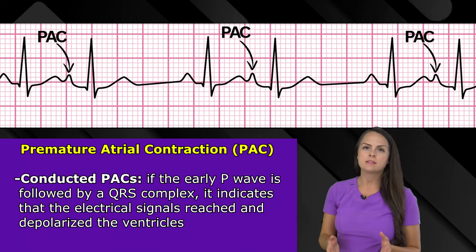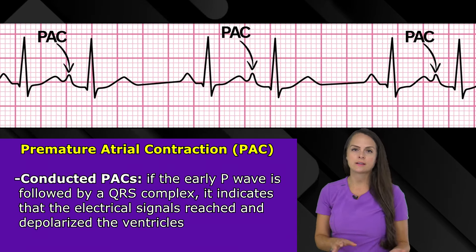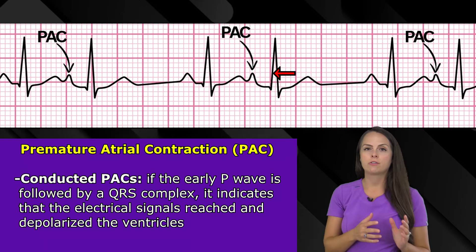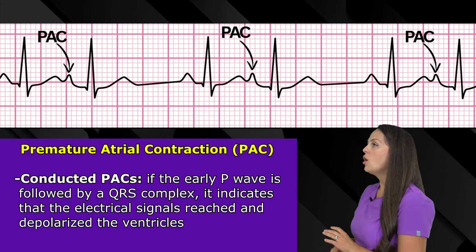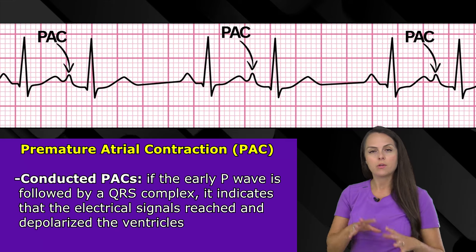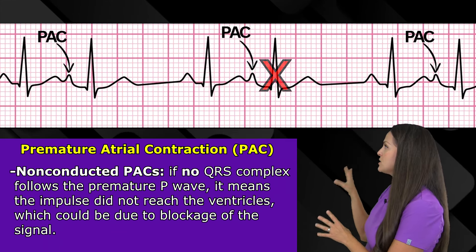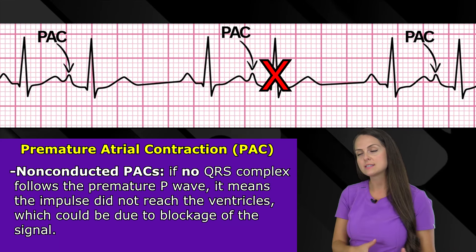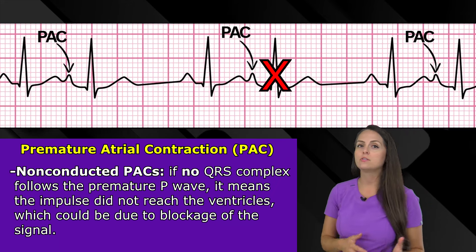PACs can be conducted or non-conducted. With conducted PACs, the early P wave is followed by a QRS complex, which tells us that the electrical signal reached and depolarized the ventricles. With non-conducted PACs, there is no QRS complex after that premature P wave, meaning the electrical signal didn't reach the ventricles — it was likely blocked.